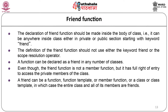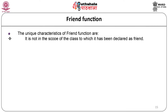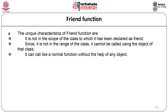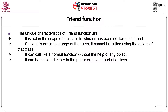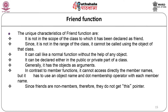A friend can be a function, function template, member function, or a class or class template - in which case the entire class and all its members are friends. Unique characteristics: it is not in the scope of the class, so it cannot be called using the object of that class. It can be called like a normal function without any object. It can be declared in public or private part of the class, generally takes the object as argument, and must use the object name and dot membership operator to access members. Since friends are non-members, they do not get the `this` pointer.